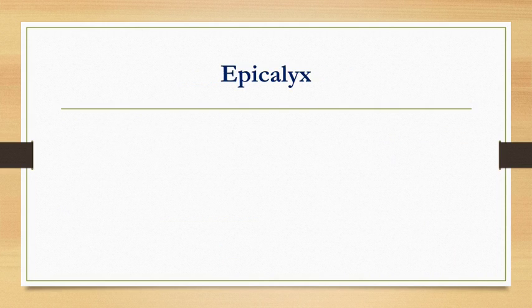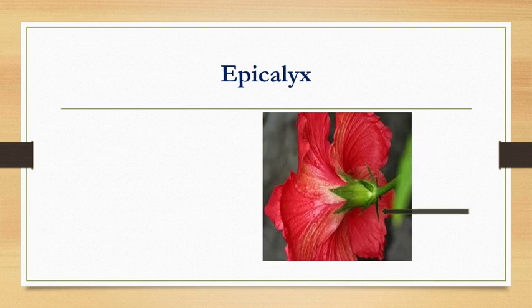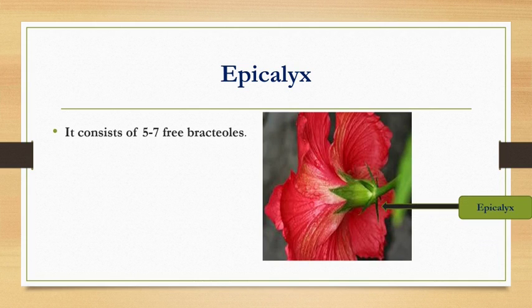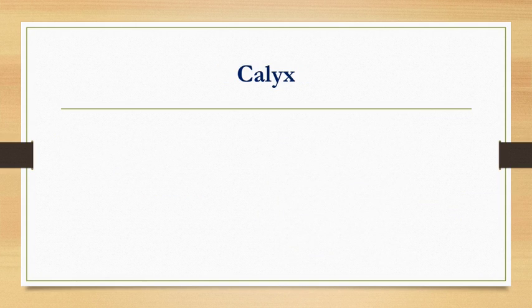First, we will talk about epicalyx, also called bracts. You can see in the picture these are bracts or epicalyx — it consists of five to seven free bracteoles. If the flower has bracts, it is called a bractiate flower. If the flower is without bracts, it is called an ebractiate flower.